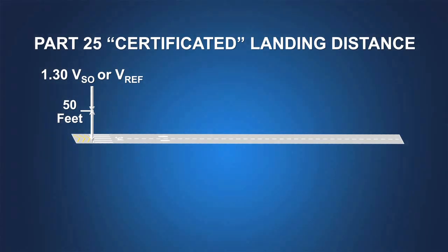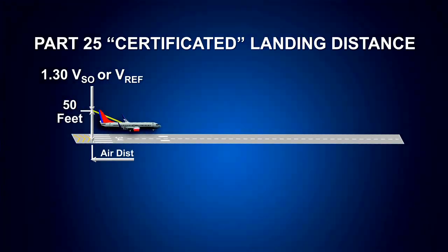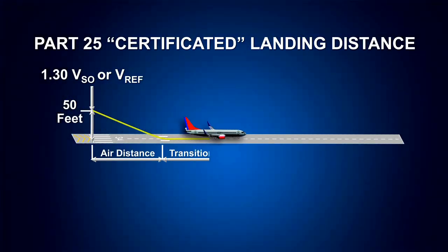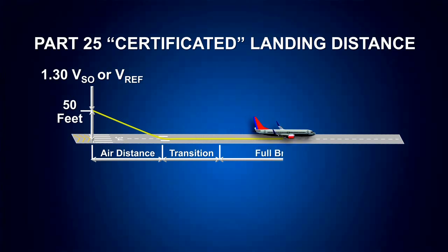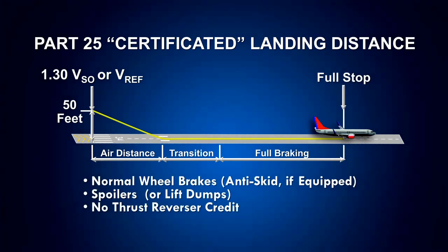The landing distance for a transport category airplane is defined by the certification rules in Part 25. This certificated landing distance starts at the point where the airplane main wheels are 50 feet above the runway surface. It continues through a nominal air distance and includes time delays allowing for the transition into the stopping configuration. The landing distance ends at the point where the airplane comes to a complete stop. Deceleration devices such as normal wheel brakes with anti-skid action, spoilers, and lift-dumping systems may be used. However, the use of thrust reversers is not considered when calculating the certificated landing distance. Landing distances based on these certification rules reflect the maximum capability of the airplane and are generally shorter than the landing distances achieved in normal operations.